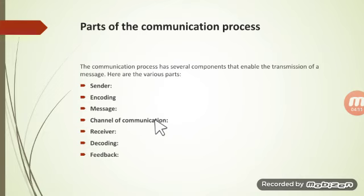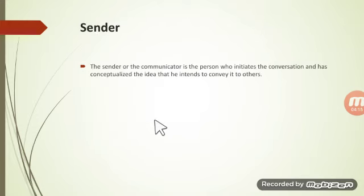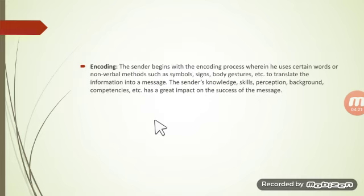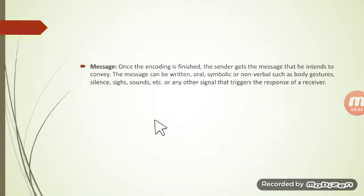The parts of communication include: sender, encoding, message, channel of communication, receiver, decoding, and feedback. The sender is the person who sends the message. Encoding means the sender may use non-verbal communication, symbols, or oral communication to make the message understandable for the receiver — this is known as encoding.